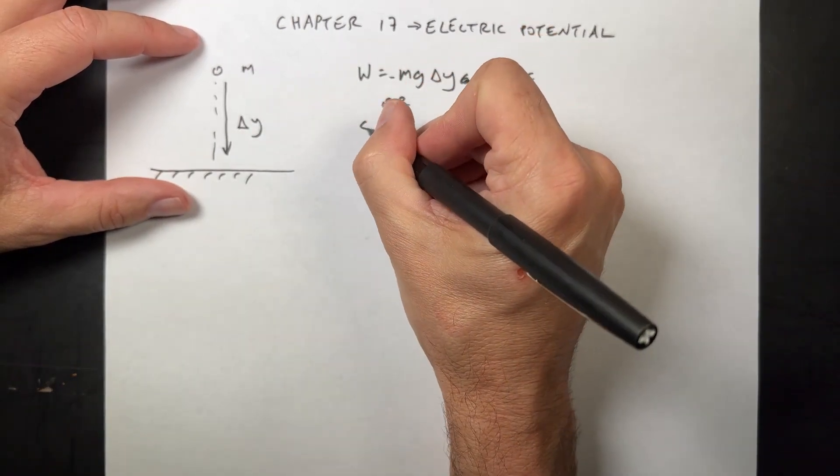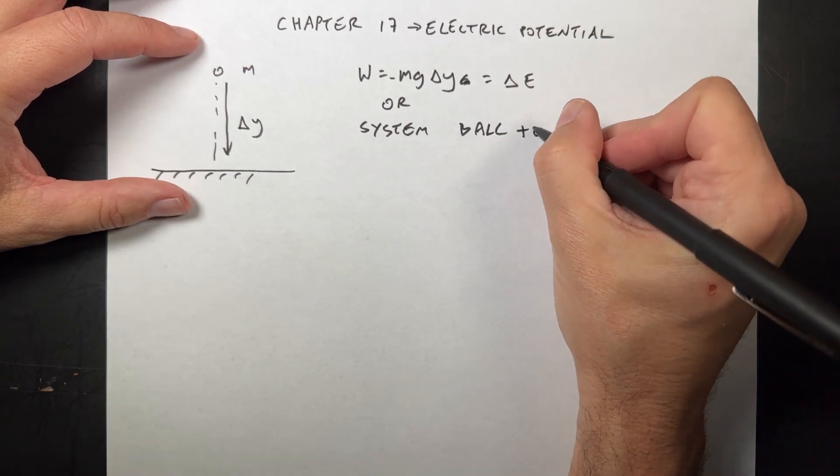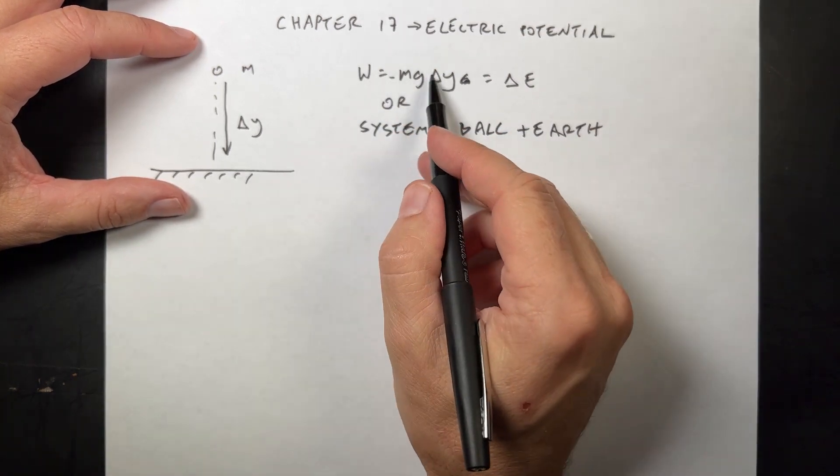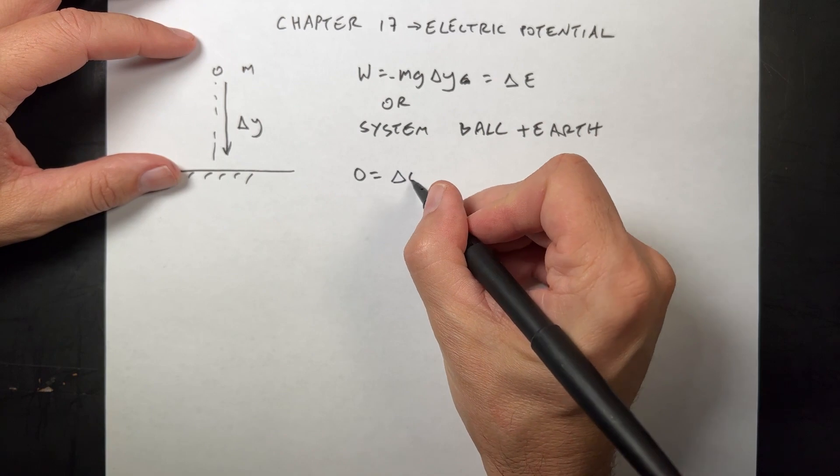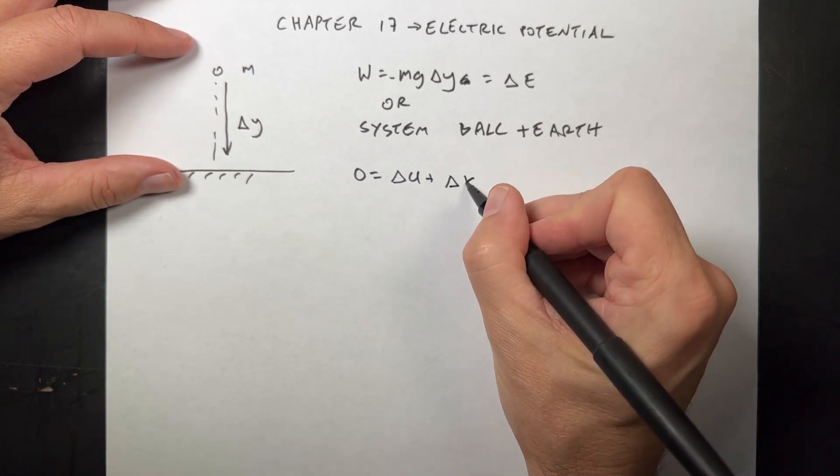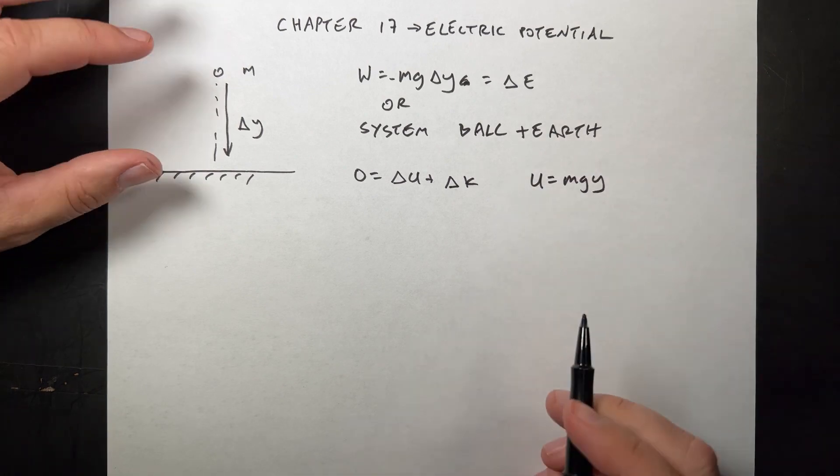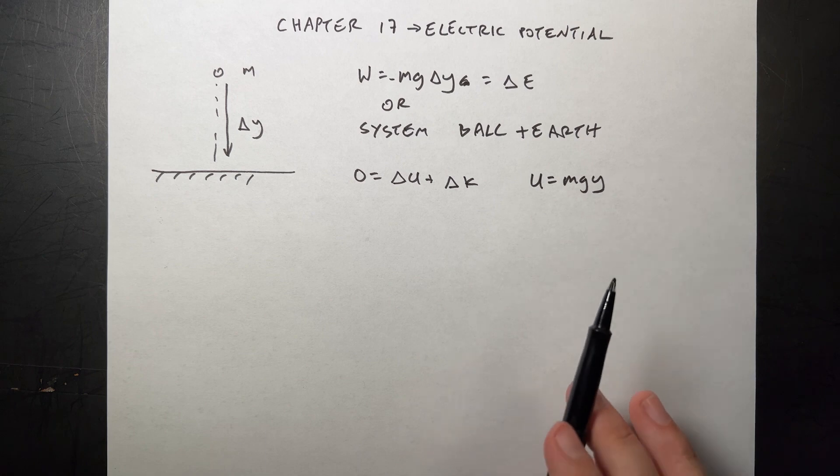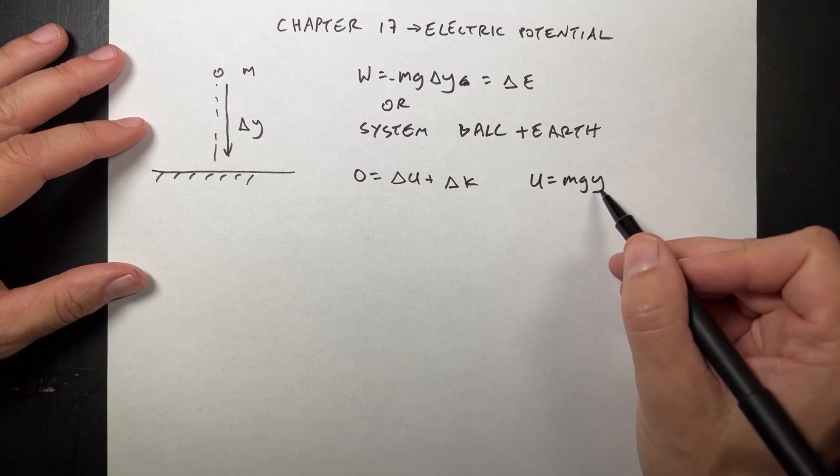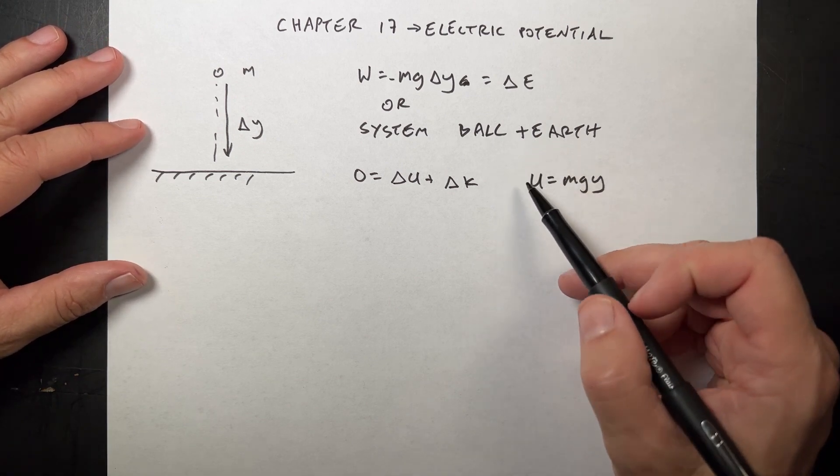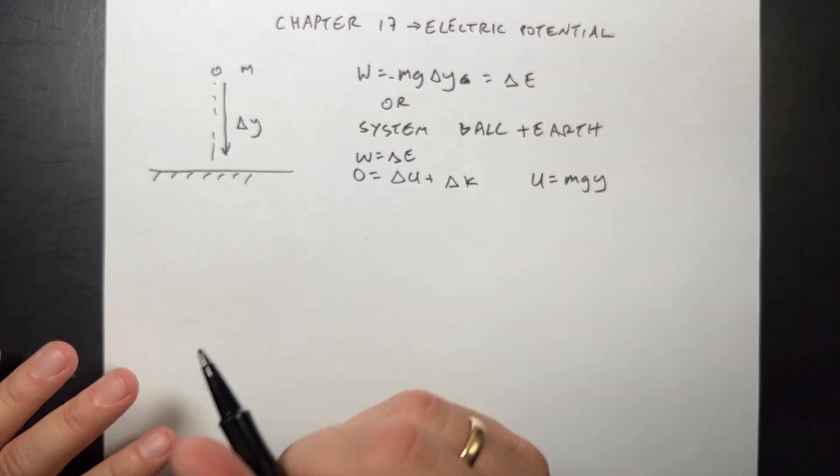And then we can use that to say that's the change in energy. Or you could use the system of the ball plus the earth. And you could take that work done by gravity and move to the other side. And you could say zero, no work done. It's a change in gravitational potential energy plus the change in kinetic energy. And gravitational potential was m g y. It's the negative of the work done. That was important. And g is the gravitational field, Y is the position. But we really care about the change in potential over here in the work energy principle. Work is a change in energy.